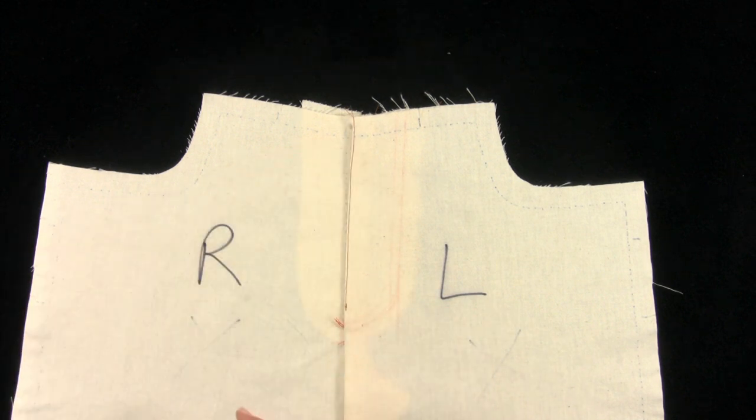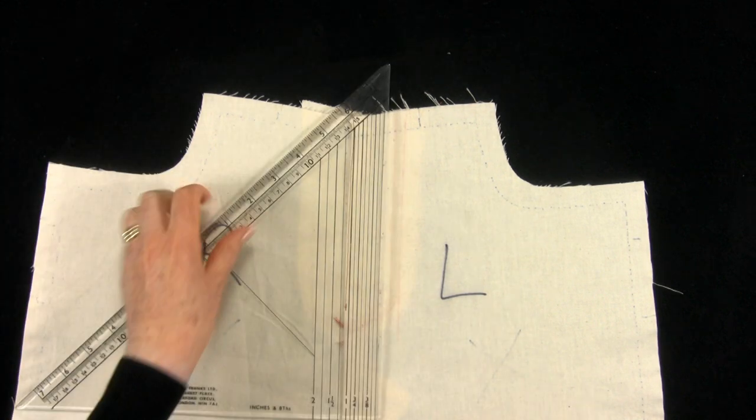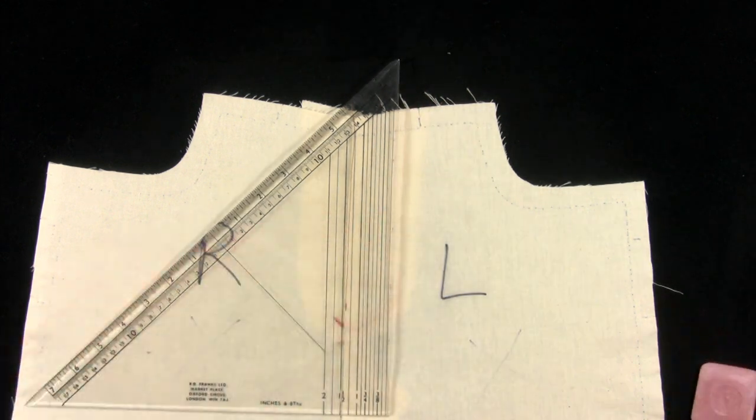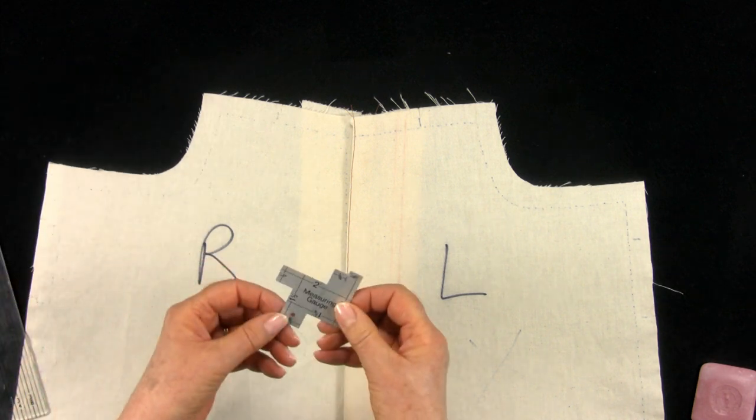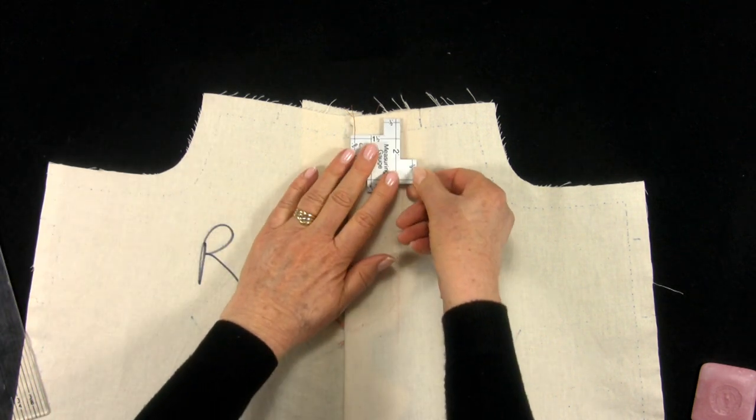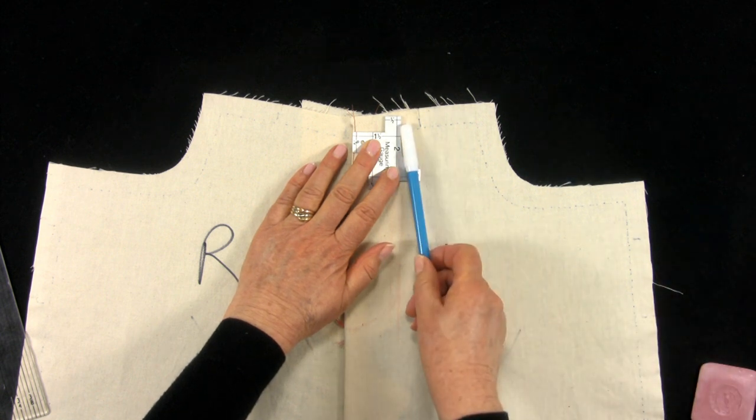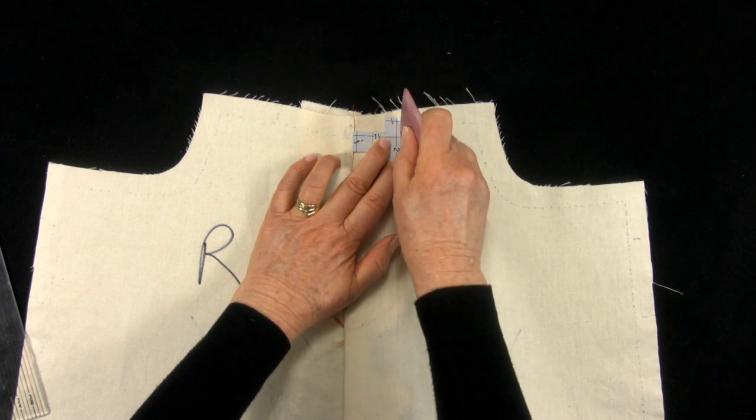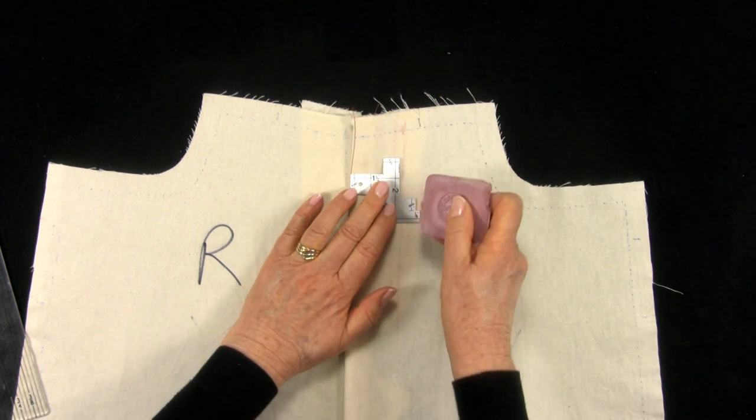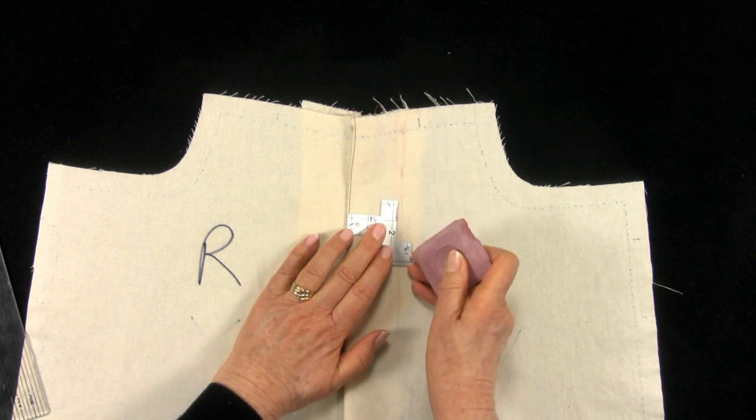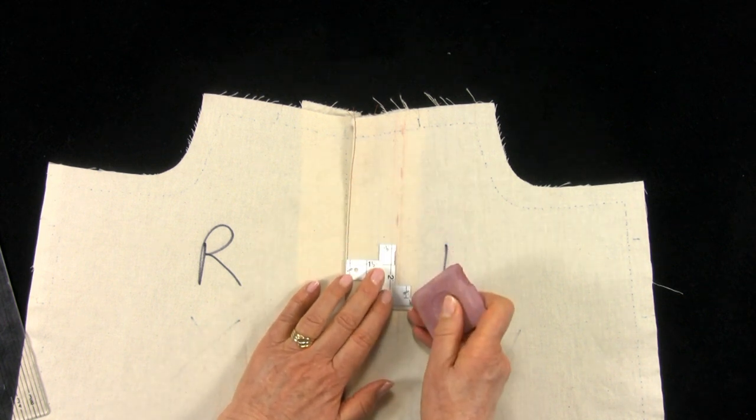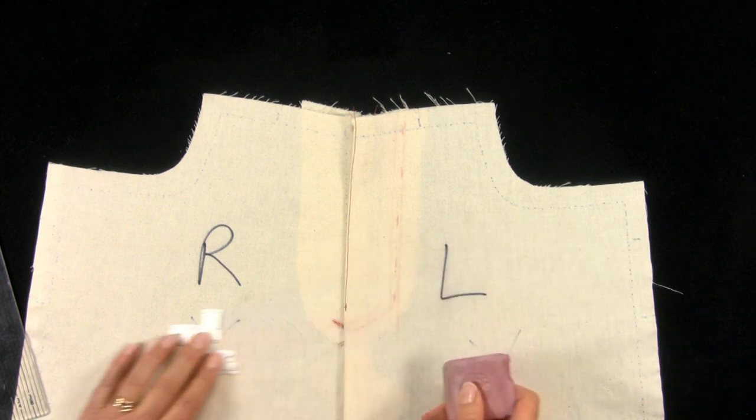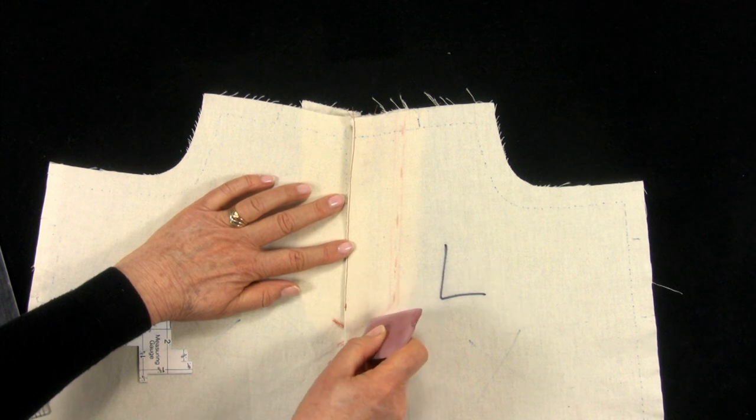Next I will mark a top stitching line with chalk. I like to use my pattern cutting set square but any guide will do. Use a marker pen or pencil if you prefer. Chalk a top stitching line one and a half inches from the center front, finishing with a nice curve towards the dot.